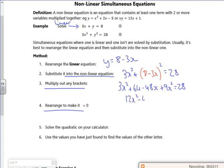And then rearrange to make it equal to 0. So let's clump it all together. So 12x squared minus 48x. Take the 28 over. It gives me 36. It's equal to 0.